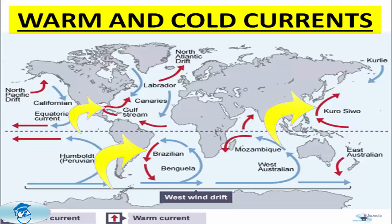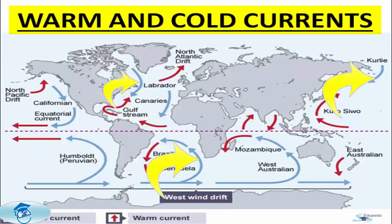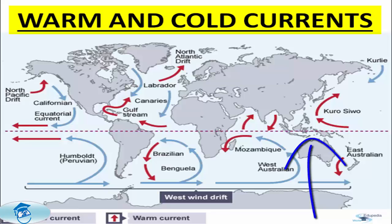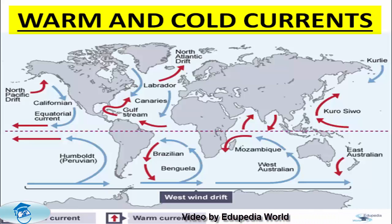The warm currents are marked with red arrows as you can also see on your screens, while the cold currents are marked with blue arrows. The cold currents have a lower surface temperature and bring cold water into warm water areas. These currents flow from the polar regions towards the low latitudes in the warm equatorial region. Some cold water currents are the Humboldt Current, the West Australian Current, and the California Current.